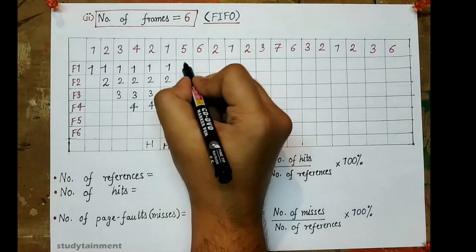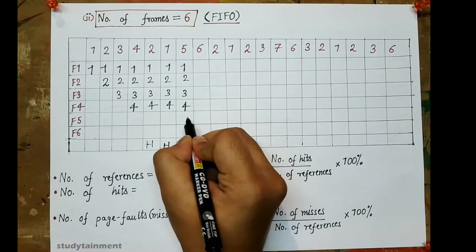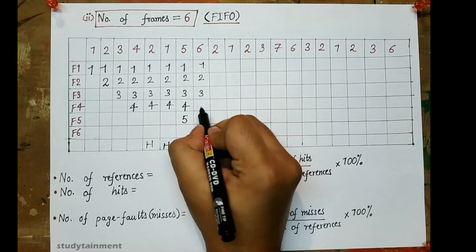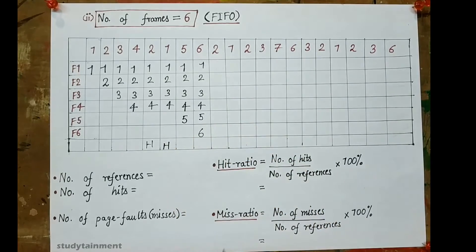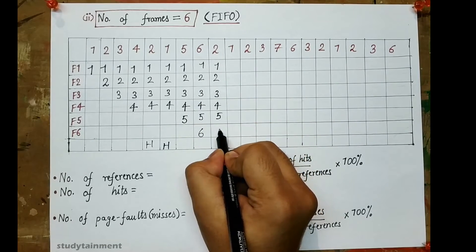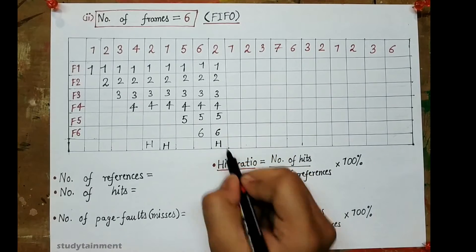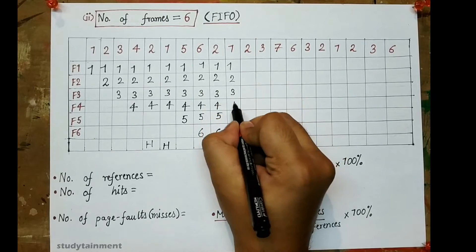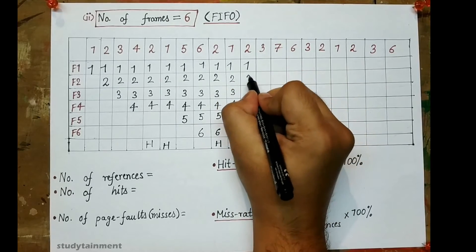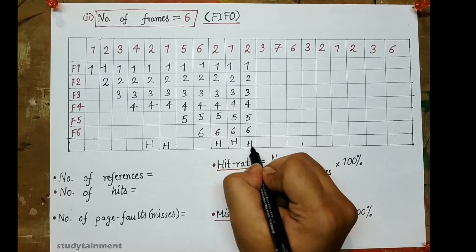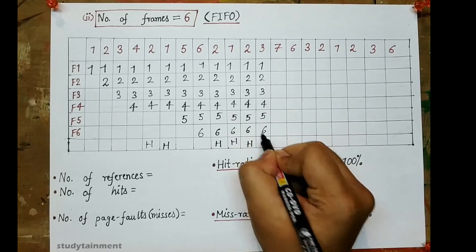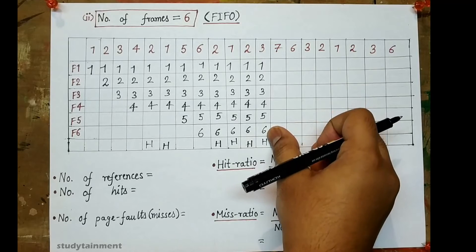Now 5 comes — 5 is not present, so this is a page fault. Then 6 comes — 6 is also not present, so this is also a page fault. Now 2 comes — 2 is already present, so this is a hit. Then 1 comes — 1 is also present, so this is a hit. Then 2 comes again — also a hit. Then 3 comes — 3 is present, so this is also a hit.